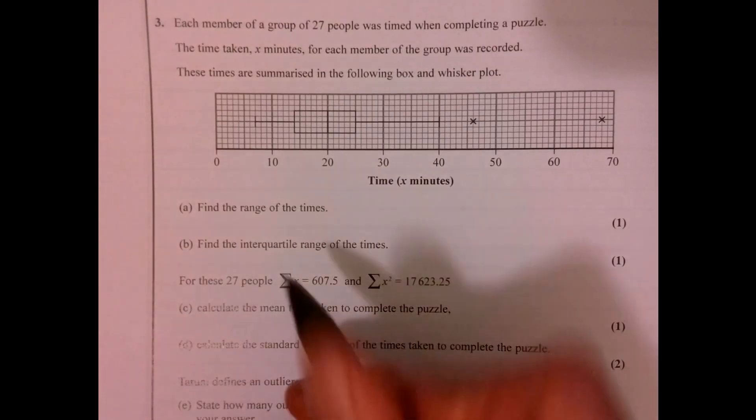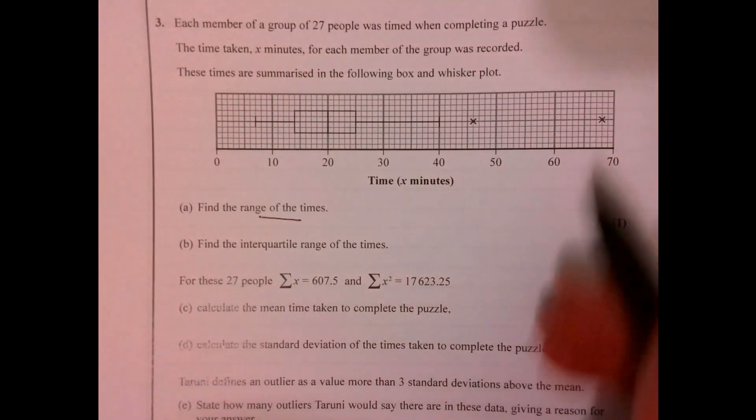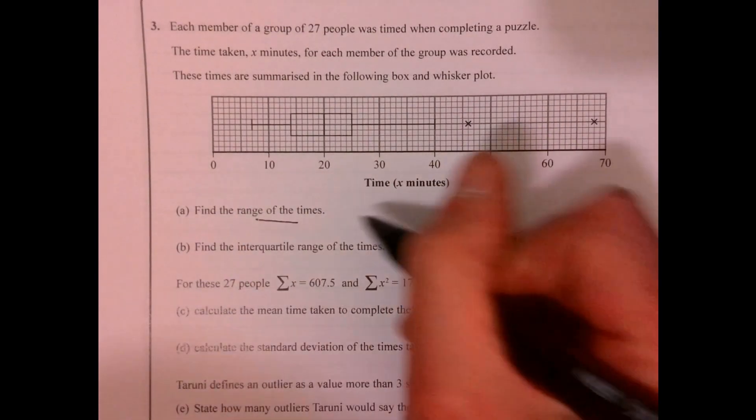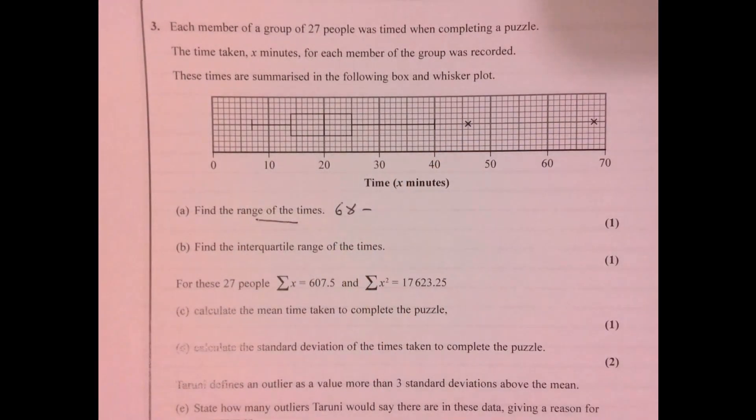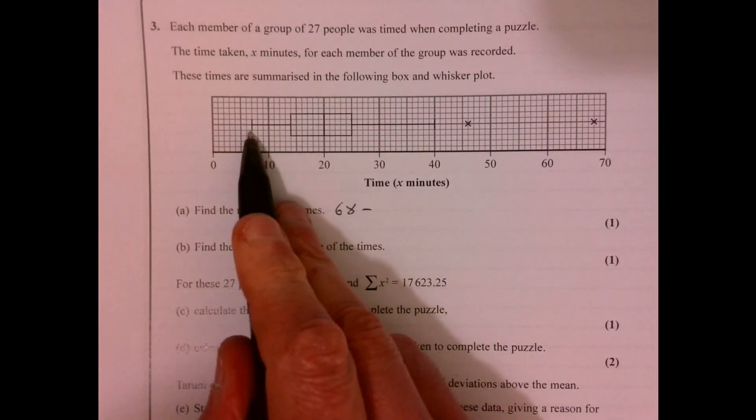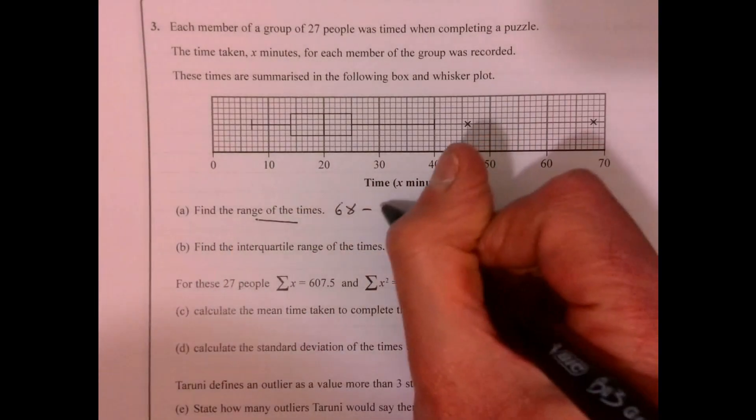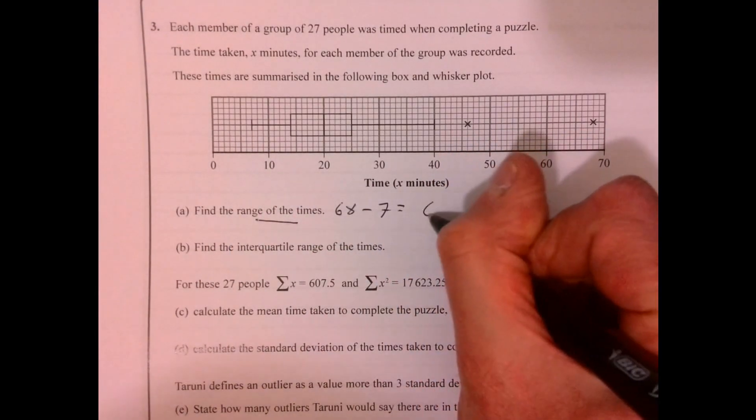Question 3. So the range of times, that's the highest take away the lowest. So 68 take away, what have we got here? 7. So there we go, that's a nice mark.